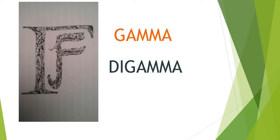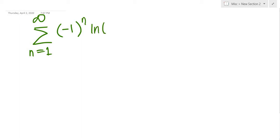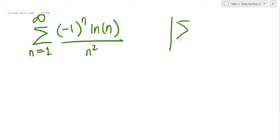Hello guys, welcome back to my channel. Today we are going to be analyzing an infinite sum and possibly solving it — finding the value of it, if it converges. So we have to check whether this series converges: the sum as n goes from 1 to infinity of (-1)^n times ln(n), all over n squared.